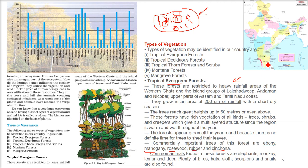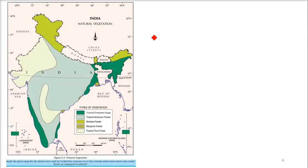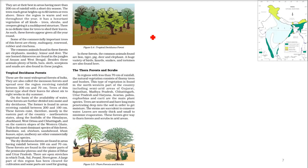Animals found in tropical evergreen forest regions include elephants, monkeys, lemurs, deer, plenty of birds, bats, sloths, scorpions, and snails. The tropical evergreen forest regions include the western Ghats (Kerala), the small Tamil Nadu coast region, and the northeastern region.